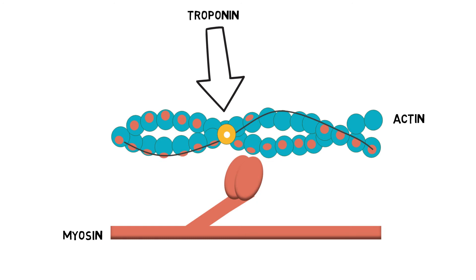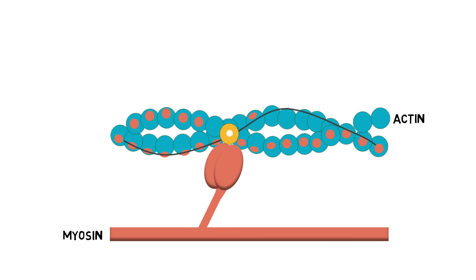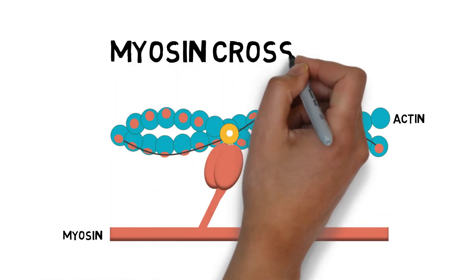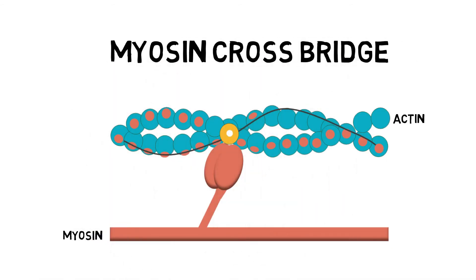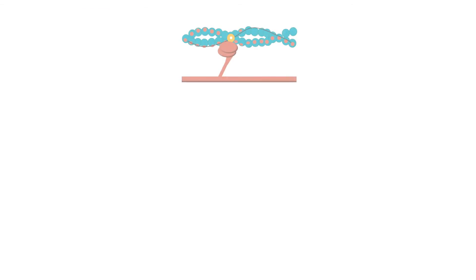Once the myosin is able to attach to the actin, a contraction can take place via the crossbridge cycle. The energized myosin heads pivot and bend, pulling the actin filament towards the center of the sarcomere. This is called the power stroke.